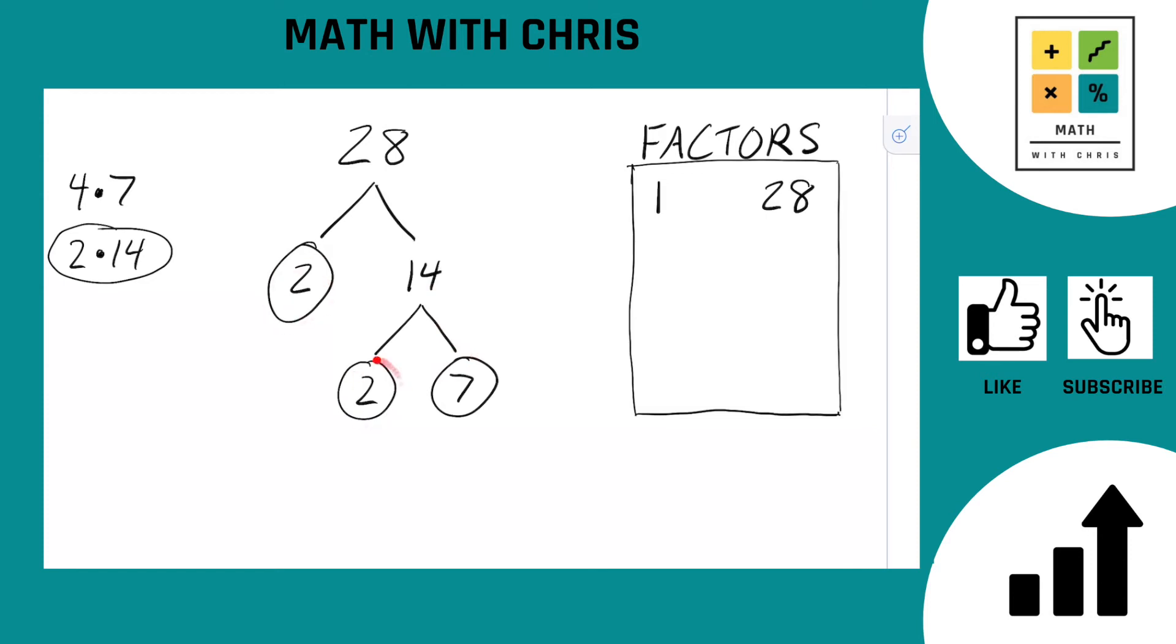We got a 2, a 2, and a 7. So, the prime factors of 28 are 2 times 2 times 7. And if you double check that, that does indeed give you 28. So, we got that right. Let's go ahead and bank the prime factors we got, which was of course 2 and 7.